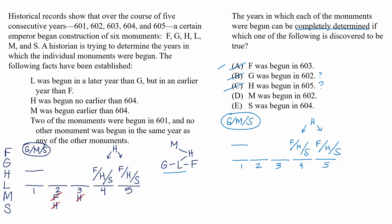D. M was begun in 602. We do know that G is in 601 if M is in 602. And then we can deduce that L is in 603. But we don't know what order F and H are in, just like with choice B.